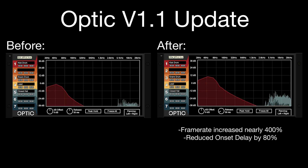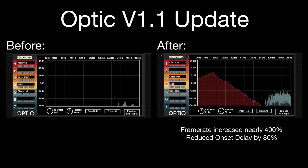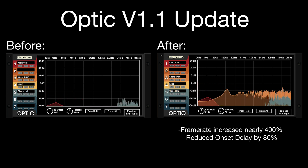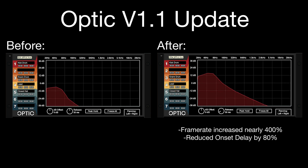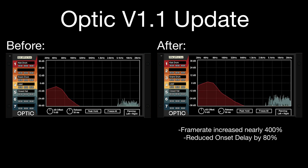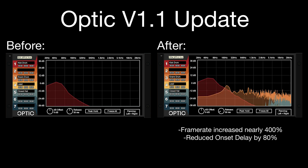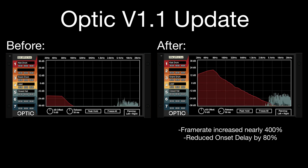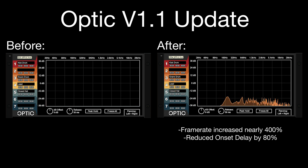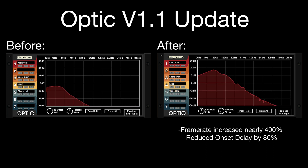Previously, Optic really struggled with staccato notes like percussion, misrepresenting the bass and hi-hat, and completely missing the snare. With the improvements in 1.1, you can see all of these elements clearly, crisply, and quickly.